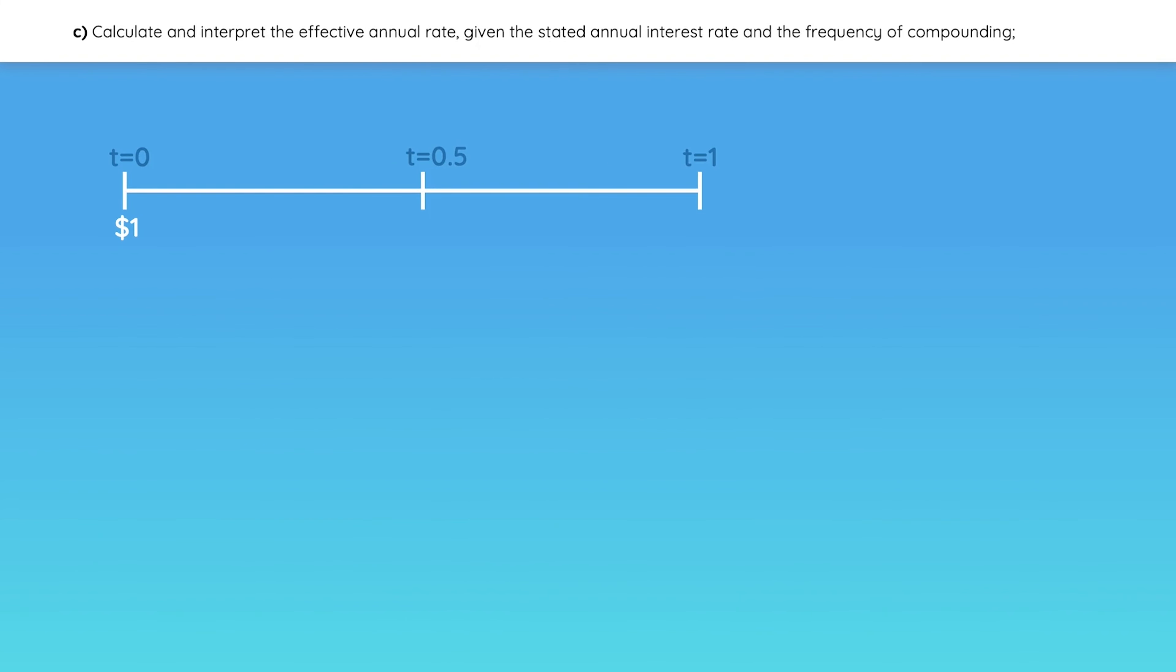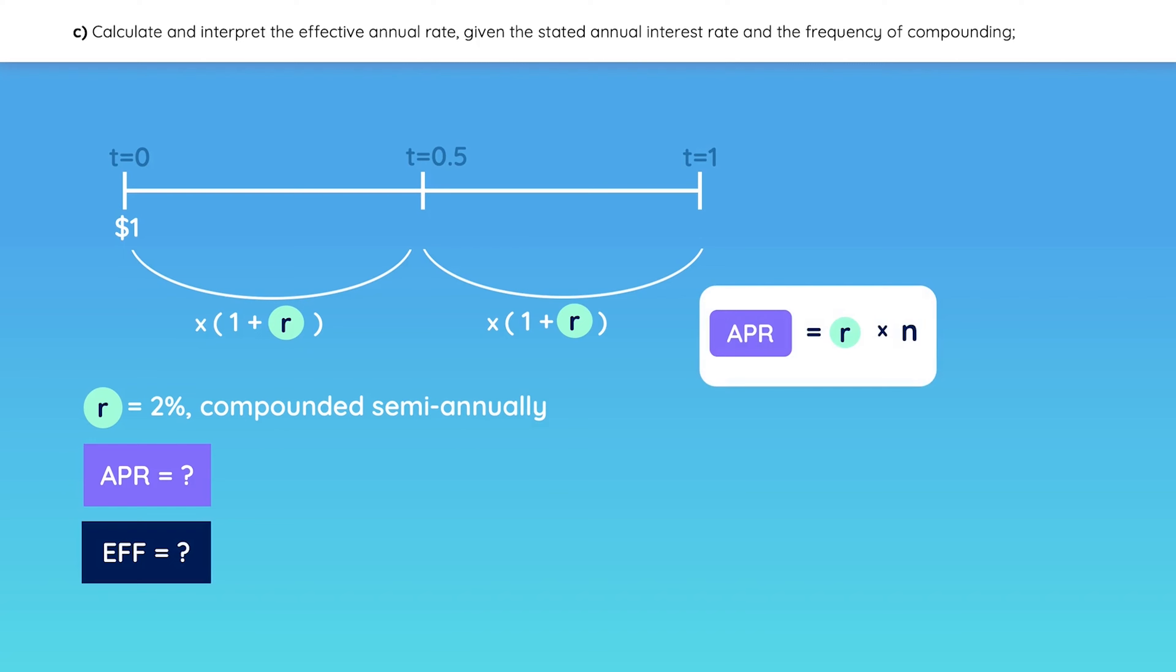Let's say you have a periodic rate of 2%, compounded semiannually. Let's place it on the timeline. What's the stated annual rate and the effective annual rate? The APR is easy. It's just the periodic rate times the number of periods. So 2% times 2 periods equals 4%. You can think of it as the simple interest, which has no compounding.